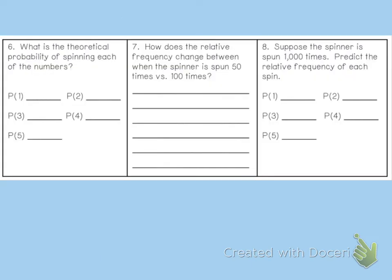Number 6. What is the theoretical probability of spinning each of the numbers? So theoretically, if we have numbers 1, 2, 3, 4, 5, each one of these numbers is going to be, I have a 1 out of 5 chance. I have a 1 out of 5 chance. I have a 1 out of 5 chance. So 1 out of 5 every single time to land on each of these numbers because there's only 1 of them and there's 5 total, correct? So 1 out of 5 chance.